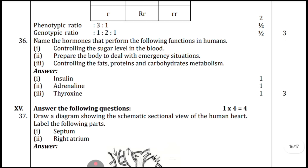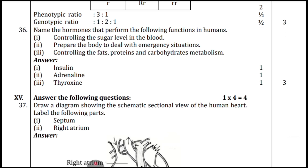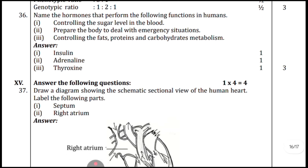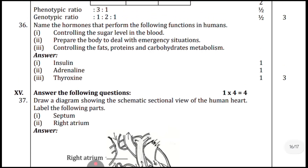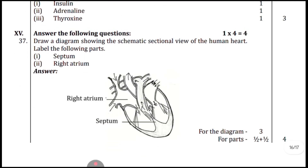Question thirty-six: name the hormones that perform the following functions in humans — controlling sugar level in blood, preparing the body to deal with emergency situations, and controlling fats, proteins, and carbohydrates metabolism. Answers: insulin, adrenaline, and thyroxine respectively. This question is worth four marks.